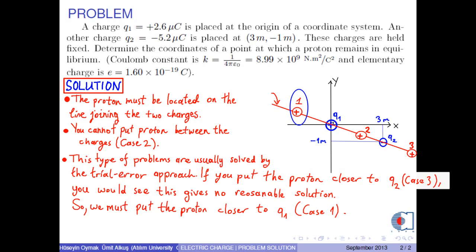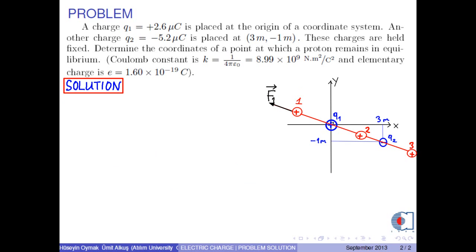In case 1, the force on the proton due to Q1 is a repulsive force, and the force on the proton due to Q2 is an attractive force. If we denote the distances as B and (B + A), because the proton remains in equilibrium, the magnitudes of F1 and F2 have to be the same, so we write F1 = F2.